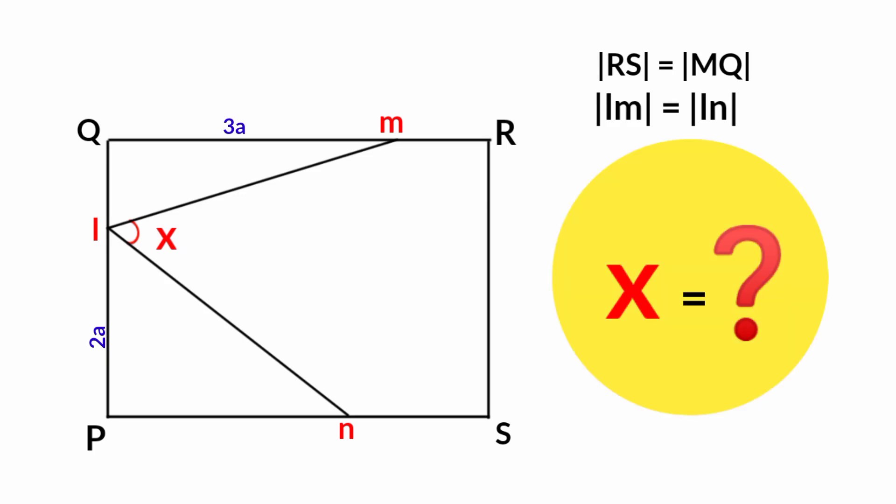Hi everyone, here we're going to calculate the size of this angle x. This is a rectangle, and we are given that line RS and line MQ are equal in length. So since line MQ has a length of 3a, side RS must also be 3a.